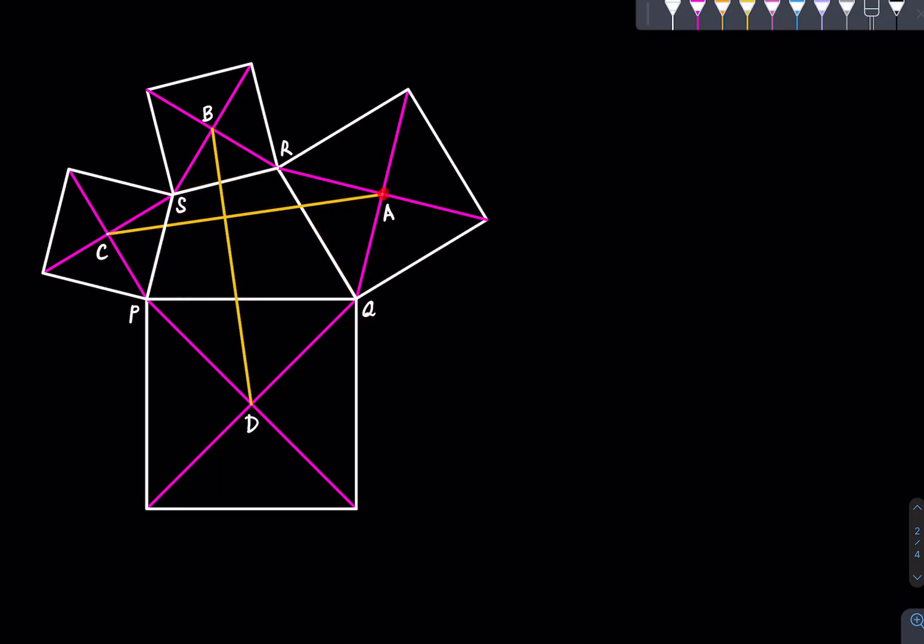So let's start by finding what this center A is. To do that, we need to find the midpoint of R and this point, and in order to do that, first we need to calculate what is the complex representation of this point in terms of P, Q, R and S.